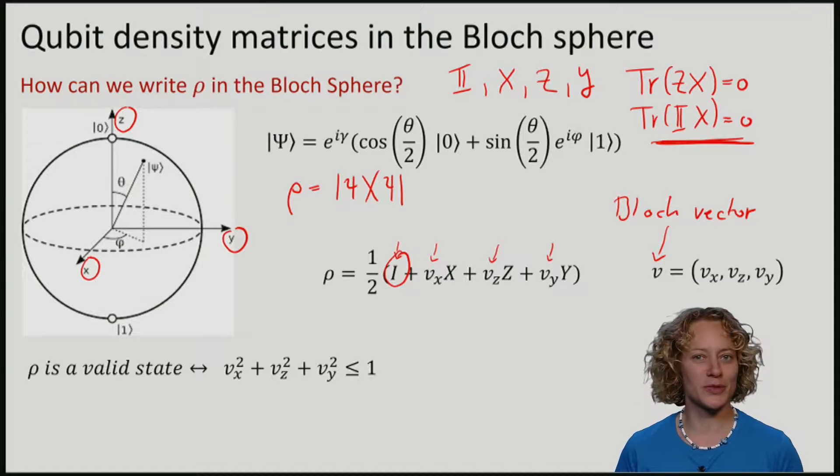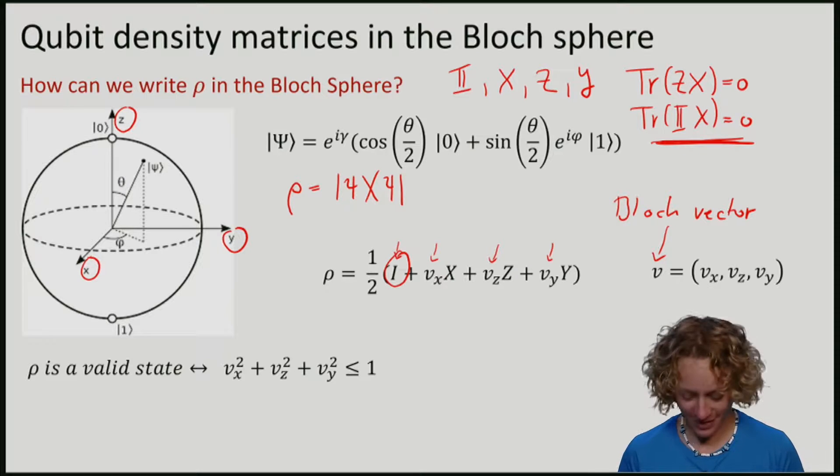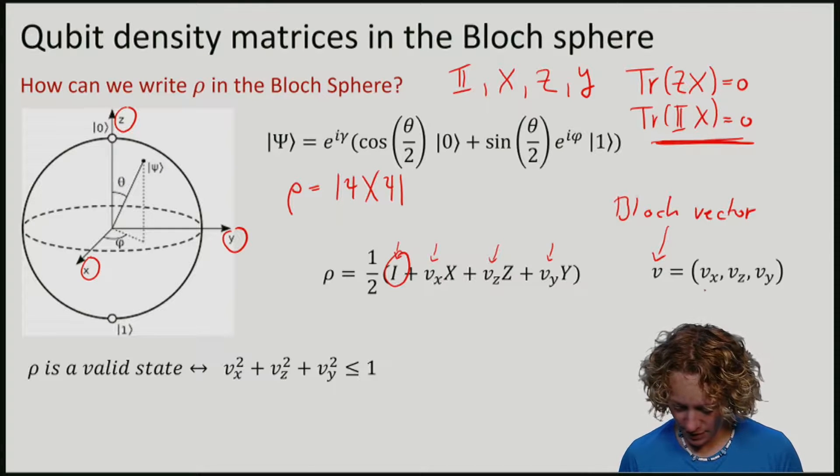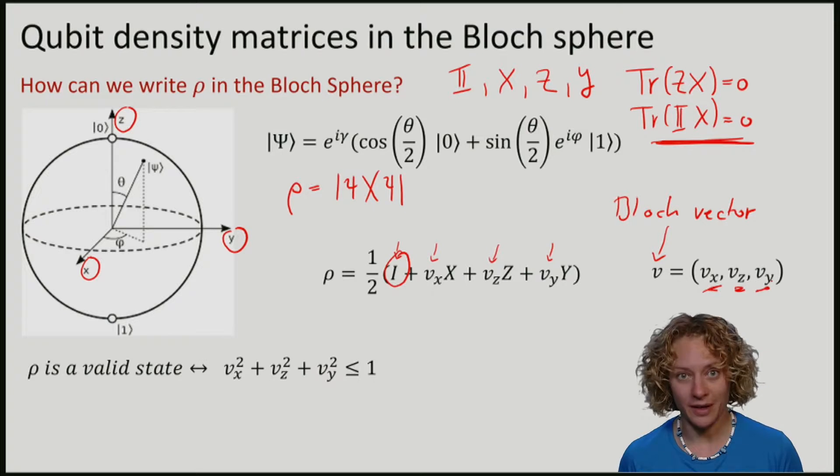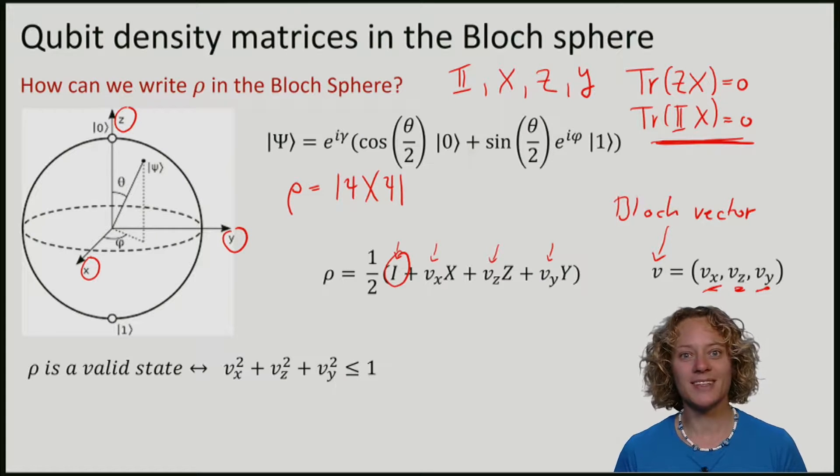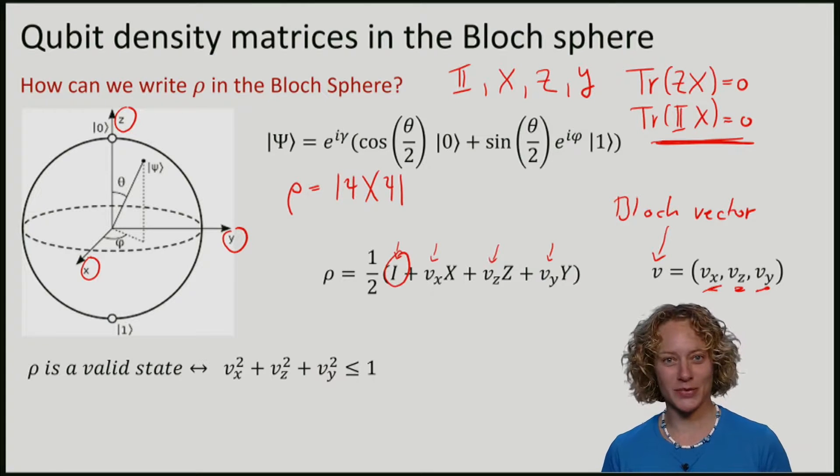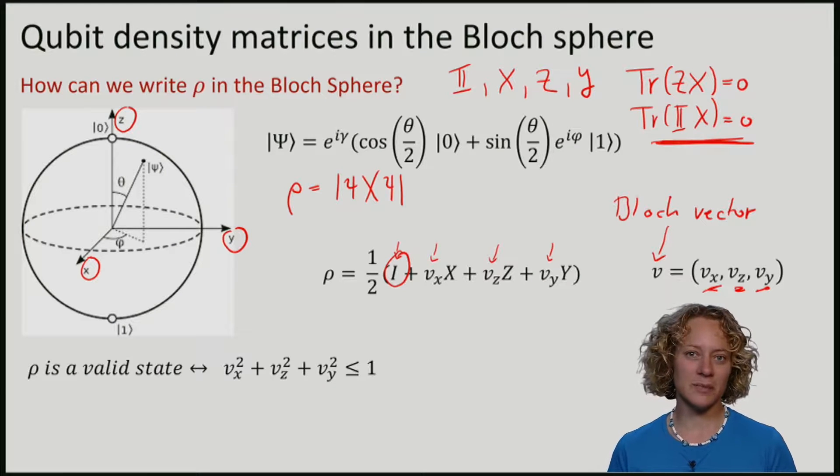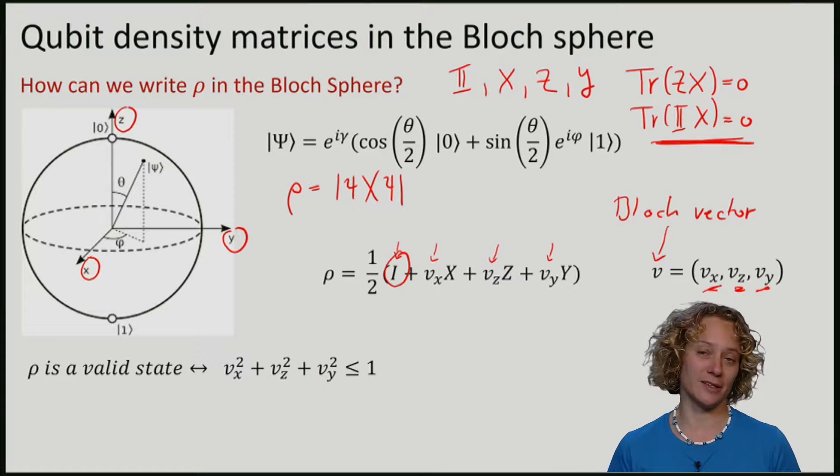And this now just corresponds to these three coordinates, X, Z and Y. This means that if I decompose rho in this form, I can immediately see where I should draw it in the Bloch sphere.